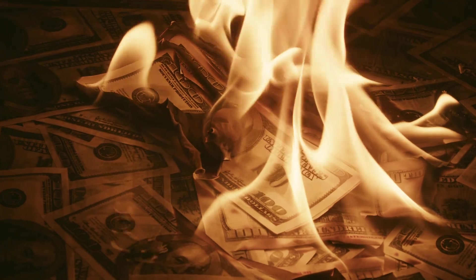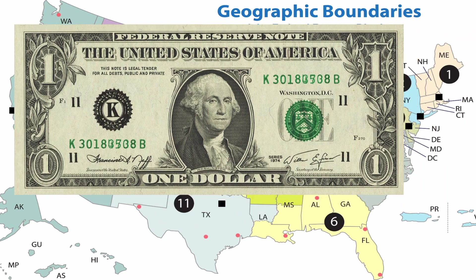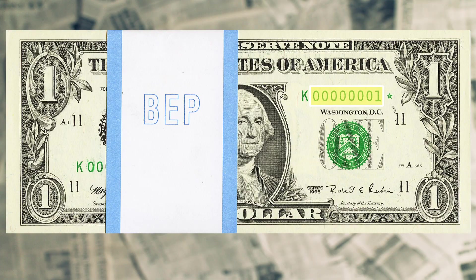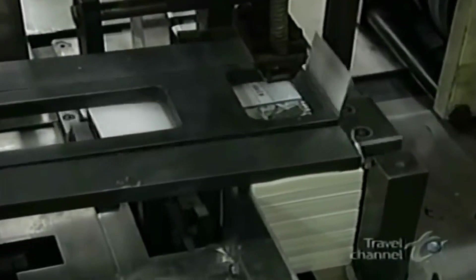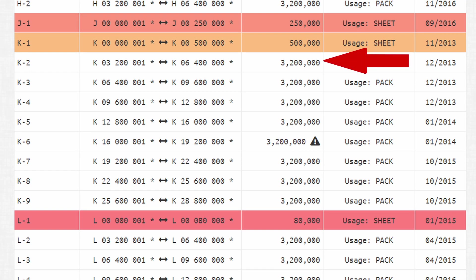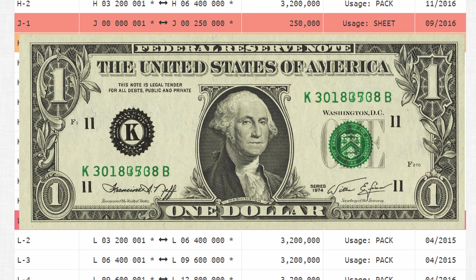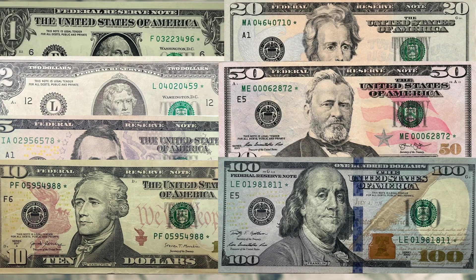When notes are destroyed due to errors, the BEP will keep the prefix of the federal bank that was supposed to receive the erred notes and simply change the suffix to a star. Then they will print starting from serial number 1 and go until they have made up for the lost number of bills. Some star note runs are as large as 3.2 million and some are as few as 3,200. Sometimes large runs of 3.2 million are printed multiple times to make up for errors that encompass lots of notes. So now we know — due to the government's printing mistakes, these cool little stars end up on some of our money.